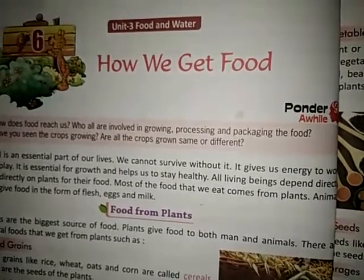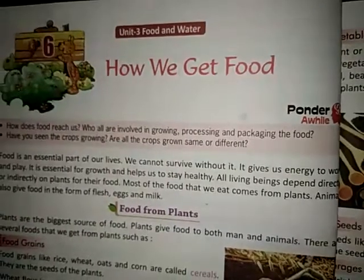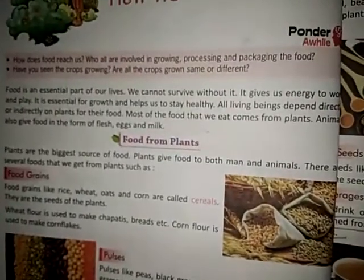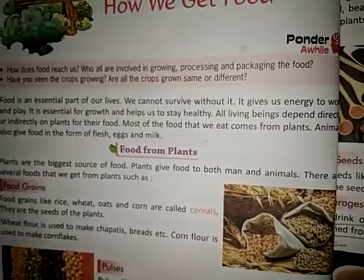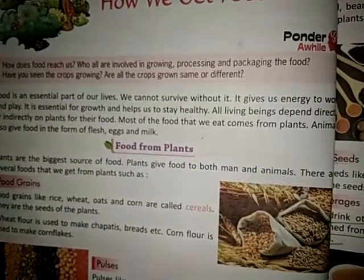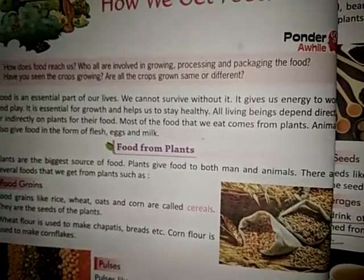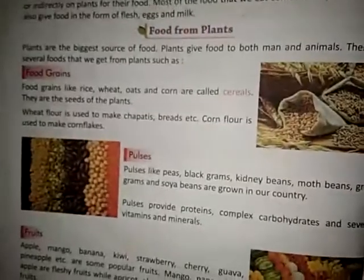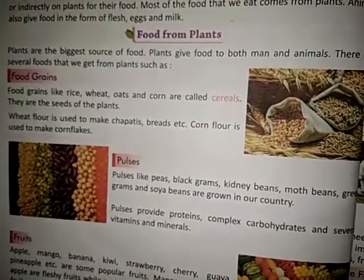Now let us know the food which comes from plants. Plants are the biggest source of food. Plants give food to both man and animal. There are many foods that we get from plants, such as food grains. Food grains like rice, wheat, oats and corn are called cereals. These are all seeds of the plants — we get them from plant seeds.